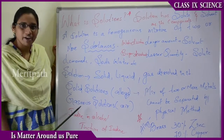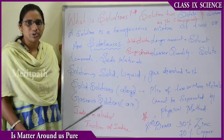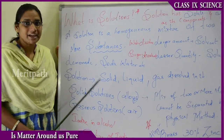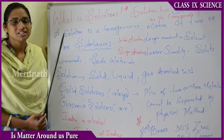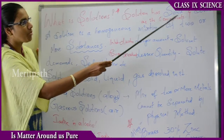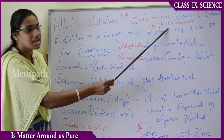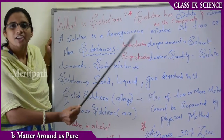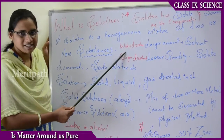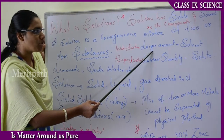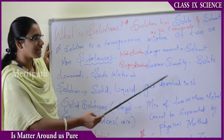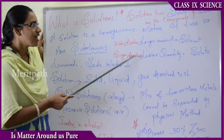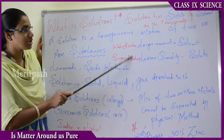Iodine in alcohol is another type of solution. Iodine is solid and alcohol is liquid. A solution consists of two components: solute and solvent. Solute is the component present in lesser quantity and solvent is present in larger quantity. For example, in sugar water, sugar is the solute and water is the solvent.